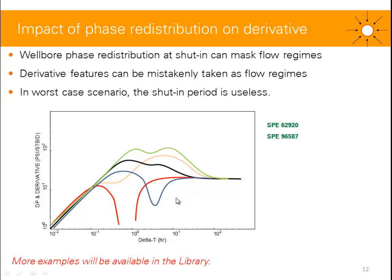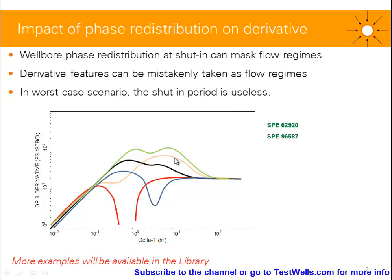Wellbore phase redistribution is going to mask any flow regimes that you have in between. Some derivative features can be mistakenly taken as flow regimes. For example, for the black response, we could assume we've got a zone near the wellbore at a lower permeability — that could be due to a multi-phase region with lower effective permeability, a limited perforation, or a permeability change around the wellbore with an increase further away. For the pink response, if you've got fracture behavior, you could assume this is the fracture behavior, and the decrease in the derivative could be interpreted as a limited frac height or spherical flow towards the frac.